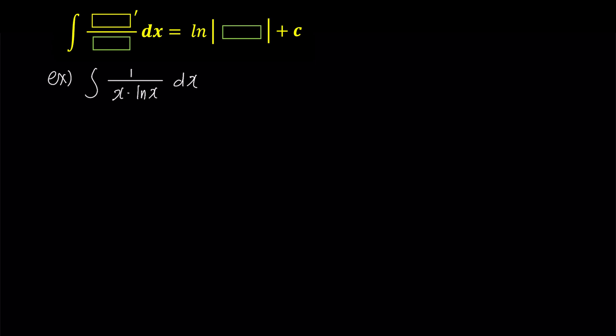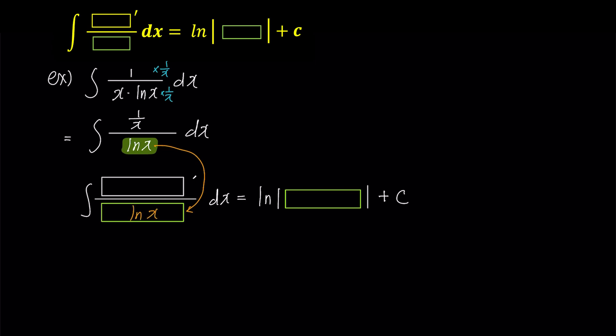This problem also has all the terms in the denominator. To create the box prime over the box that we want, let's move x from the denominator to the numerator. If we multiply 1 over x to the top and the bottom, x in the denominator disappears, and only 1 over x remains in the numerator. Well done! It has been successfully moved. What was the derivative of ln x again? Yes, it was 1 over x. Now, let's apply the box rule by putting ln x in the denominator and 1 over x in the numerator, and ln x in the right-hand box as well. And we are done.